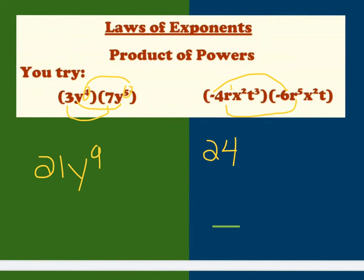So I have 1 r here and 5 here, so I've got a total of 6 r's. And my x's, I've got 2 here and 2 here, so I added it together, that gives me 4 of those. And I've got t to the 3rd and t to the 1, so together that makes t to the 4th.